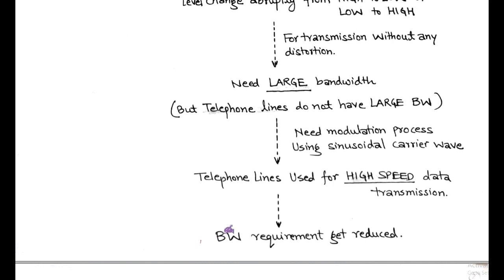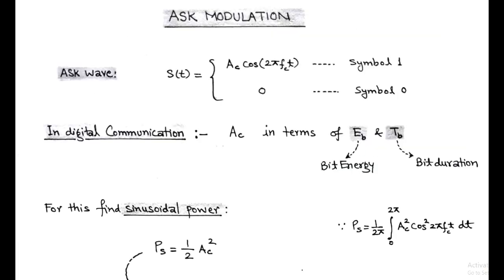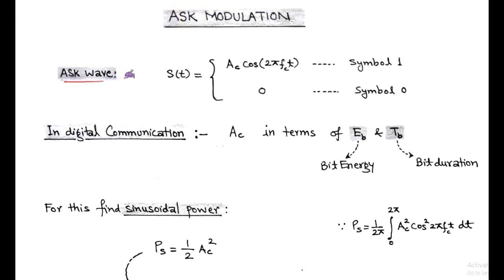So we can say that using modulation with a high-frequency carrier wave, the bandwidth requirement gets reduced, and this is an advantage of using continuous wave digital transmission techniques. The basic and fundamental digital continuous wave modulation technique is ASK modulation, that is, amplitude shift keying. In ASK, the two binary values are represented by two different amplitudes of the carrier frequency.